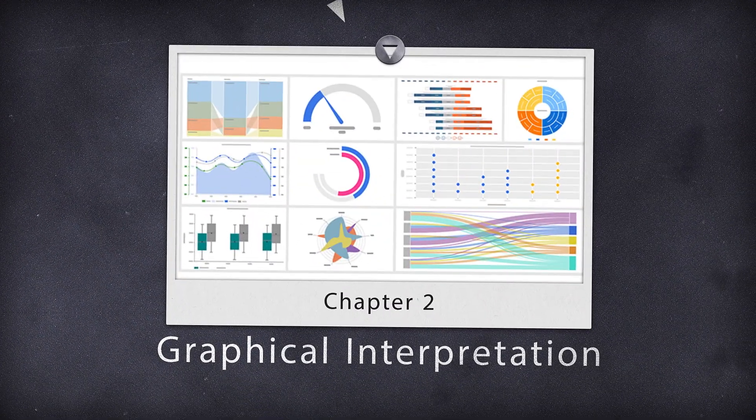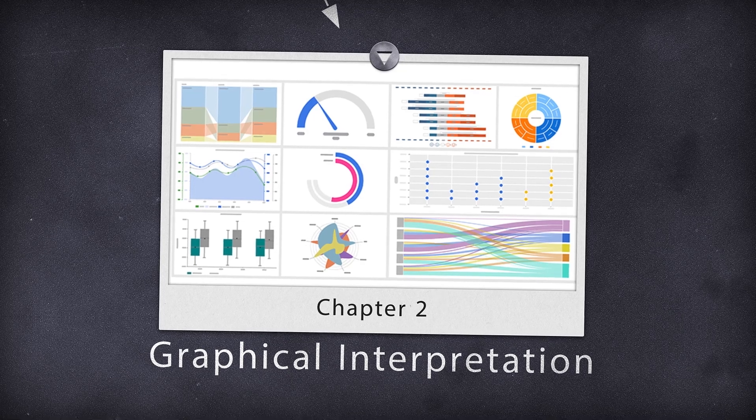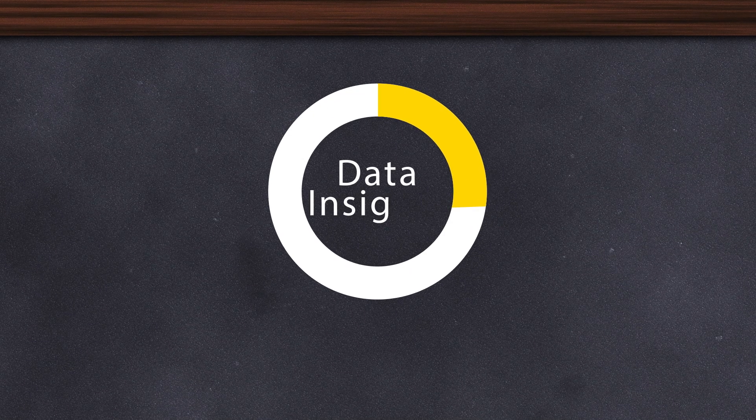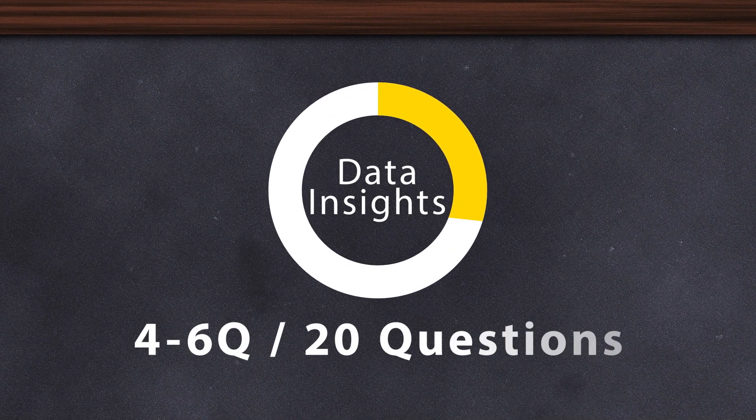Graphical interpretation. Graphical interpretation is all about understanding charts, graphs, and diagrams. This makes up 20 to 30 percent of data insights which is approximately 4 to 6 questions out of 20. This tests how well you can read visual information and it's very less about math. It's about understanding the graphs.